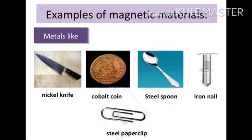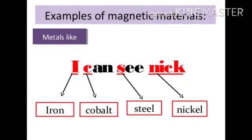Examples of magnetic materials are metals like nickel, cobalt, steel, and iron — these are attracted towards a magnet. To help remember magnetic substances, use the mnemonic 'I Can See Nick': I for iron, Can for cobalt, S for steel, Nick for nickel. So iron, cobalt, steel, and nickel are the magnetic materials attracted towards a magnet.